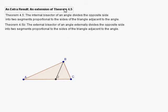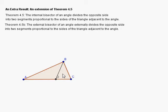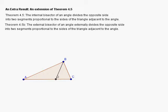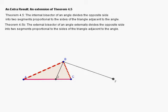In this video we're going to prove an extension of theorem 4.5. Theorem 4.5 says that the internal bisector of an angle divides the opposite side into two segments proportional to the sides of the triangle adjacent to the angle. The ratio of the length of segment AD to DC equals the ratio of AB to BC. What we're going to prove is that an analogous result applies for the external bisector and its intersection with the line extended through the opposite side of the triangle.